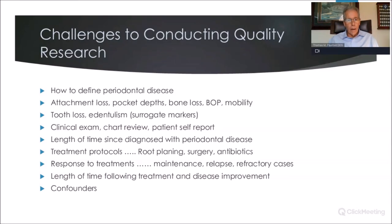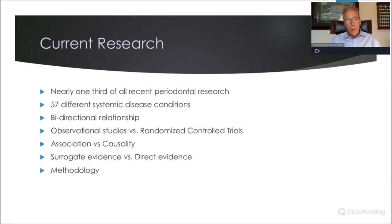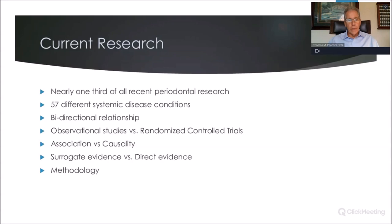Finally, we have confounders. We know that smoking contributes to lung cancer but also worsens periodontal disease, so we have to be able to eliminate confounders in these studies — and that's a challenge. Currently, nearly a third of all periodontal research is related to the oral health–systemic health connection, looking at 57 different systemic disease conditions — everything from erectile dysfunction to Alzheimer's disease. There are bi-directional relationships, and we look at those particularly in diabetes. When we look at the research, the majority of studies we'll see are observational studies versus randomized controlled trials, which are considered the gold standard.